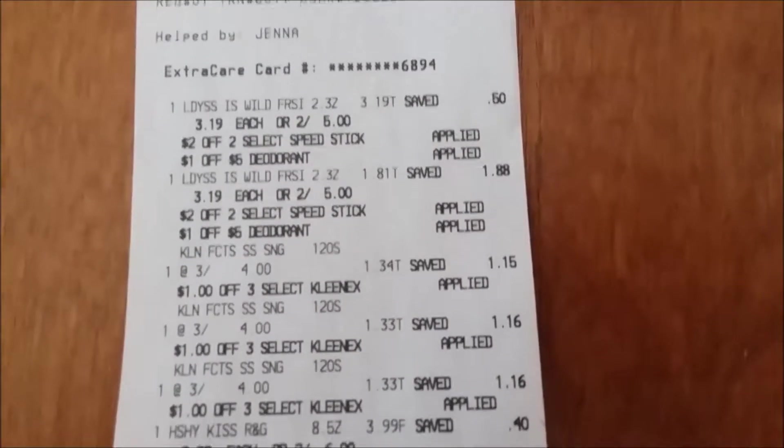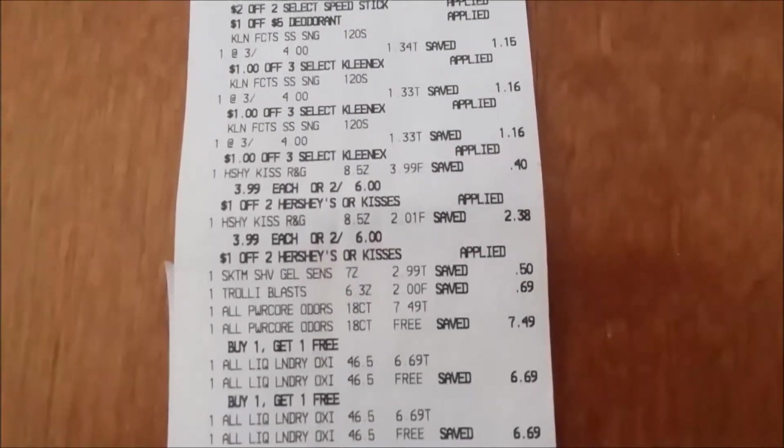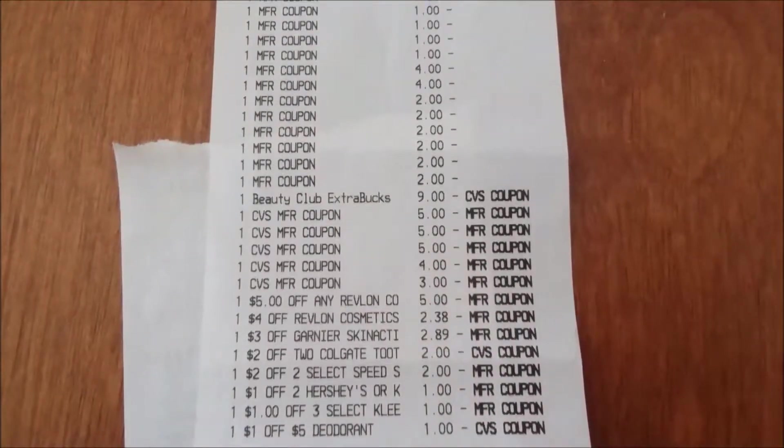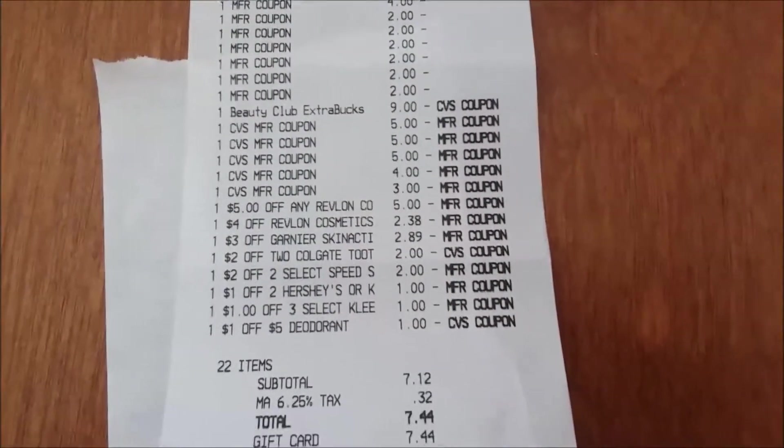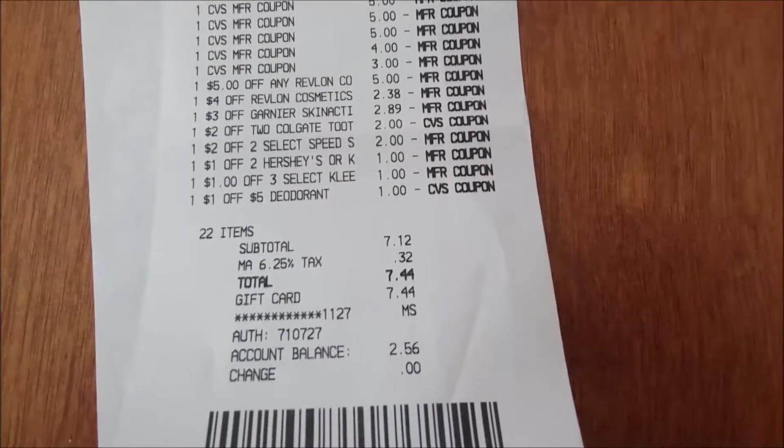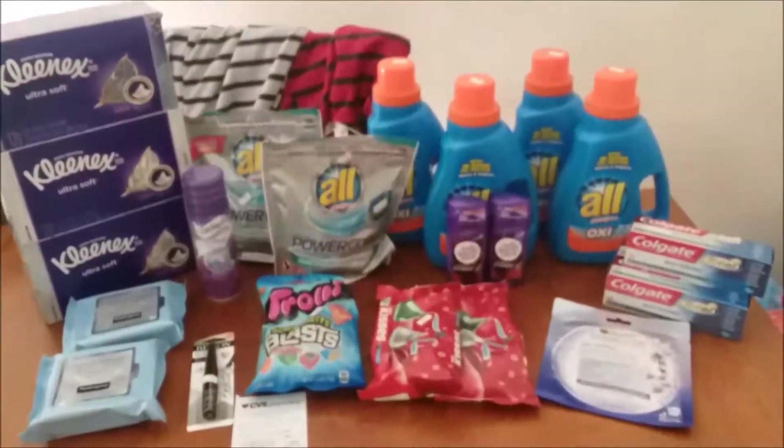Here's my receipt, all the stuff I got, there's the laundry soap. Here's all my coupons that I used, here's all my CRTs, and there's my subtotal $7.12 for everything you see right here.